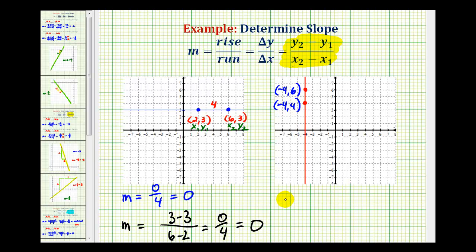Now, if we start by comparing the vertical change to horizontal change from this point to this point, notice how now we'd have a vertical change of up 2 or positive 2, but a horizontal change of 0. So the ratio would be 2 to 0, or 2 divided by 0, which is undefined.